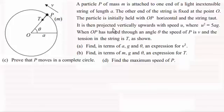The particle is initially held with OP horizontal and the string taut. It's then projected vertically upwards with speed U, where U² = 5AG. When OP is turned through an angle θ, the speed of P is V and the tension in the string is T. In the first part we've got to find, in terms of A, G and θ, an expression for V². Then we'll tackle the other problems as we go through the video.